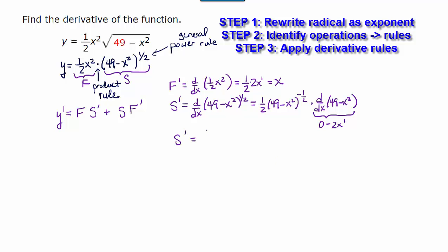S prime is going to be 1 half times 49 minus x squared to the negative 1 half times negative 2x. But 1 half times negative 2 gives us negative 1. So I'm going to rewrite this as negative x times 49 minus x squared to the negative 1 half.